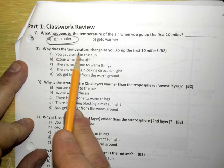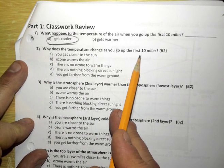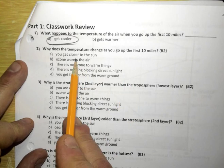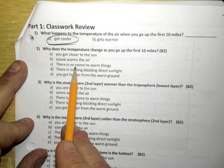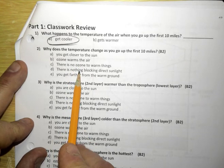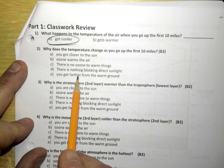Why does the temperature change as you go up the first 10 miles? Is it because you get closer to the sun, ozone warms the air, there's no ozone to warm things up, there's nothing blocking direct sunlight, or you're getting farther from the warm ground? Think about it.